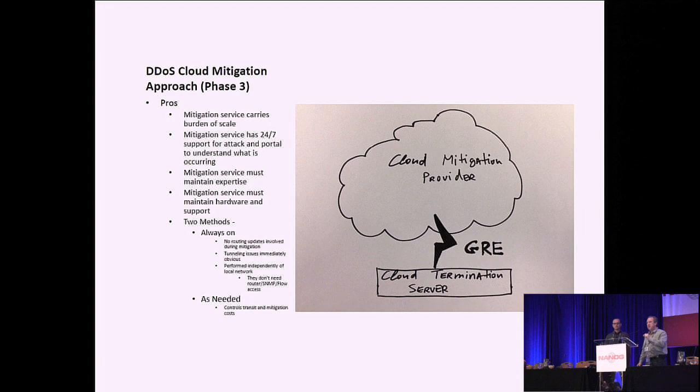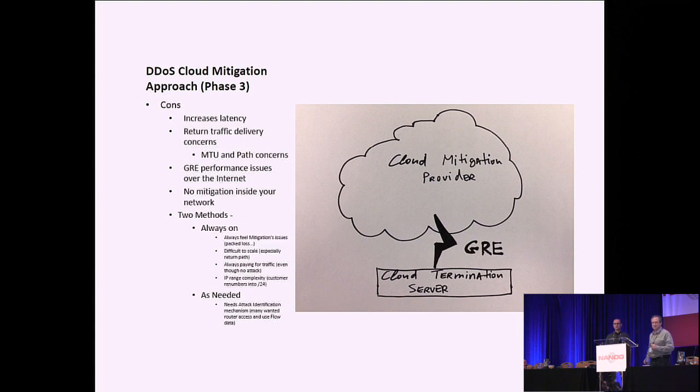In fact, a lot of times cloud providers actually want some type of access to your routers, which I have never allowed. Because I thought, why do you need access to my routers? Well, because I need to do SNMP writes. I need to do SNMP reads. I need your flow data some way or another. I'm not quite that comfortable. I mean, I trust people pretty much, but I don't trust them that way.